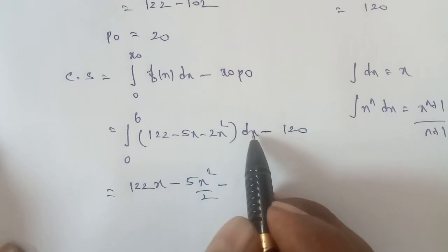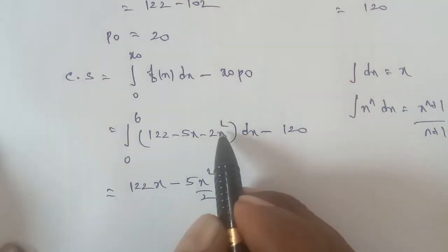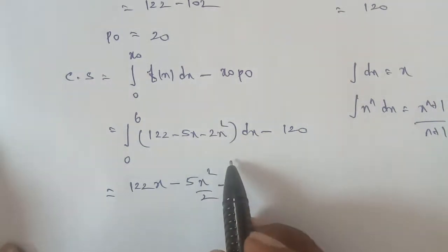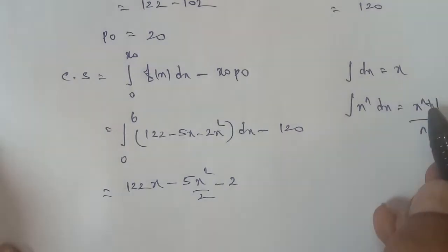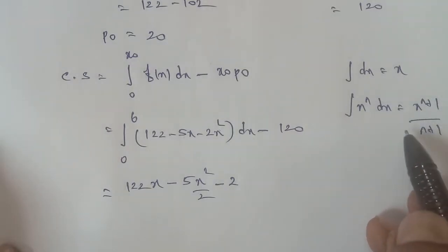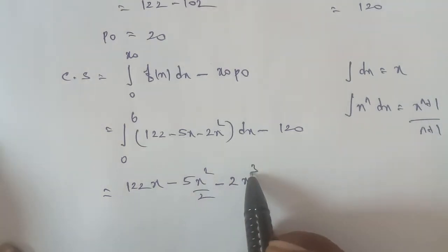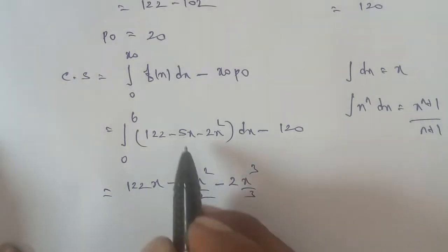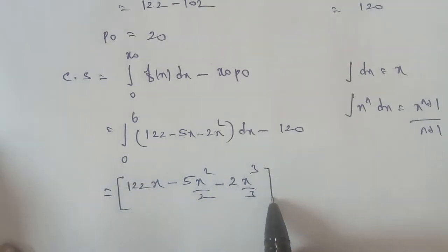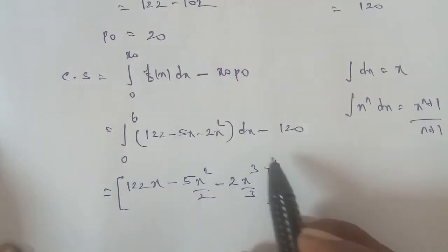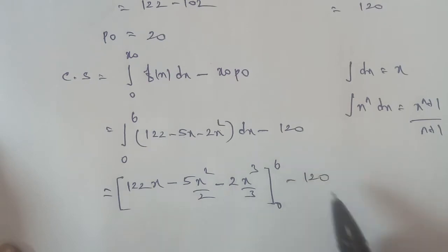For the term minus 2x squared dx: 2 is a constant. Applying the formula with n equal to 2, we get x to the power (2+1) divided by (2+1), which is x cubed divided by 3. So the integral of minus 2x squared dx gives minus 2 times x cubed by 3. The limits are 0 to 6, and we also have minus 120 at the end.